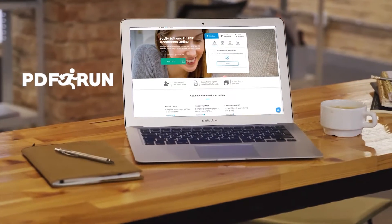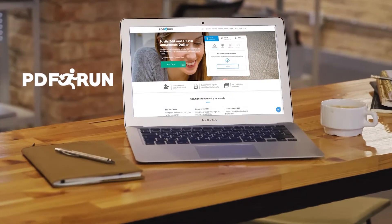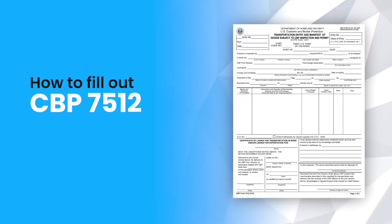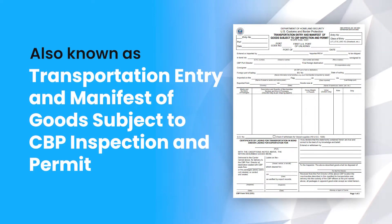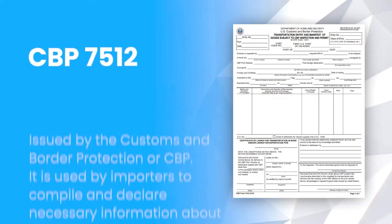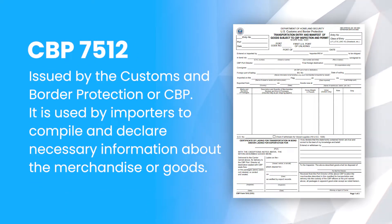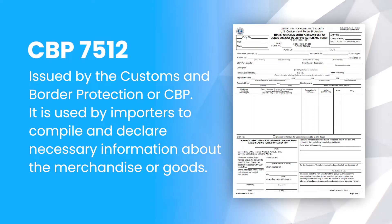Welcome to PDF Run. In this video, we'll guide you on how to fill out CBP-7512. Form CBP-7512, also known as Transportation Entry and Manifest of Goods, subject to CBP inspection and permit, is a form issued by the Customs and Border Protection, or CBP. It is used by importers to compile and declare necessary information about the merchandise or goods.